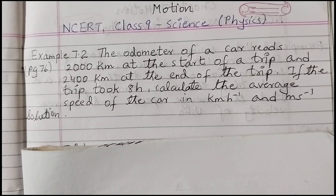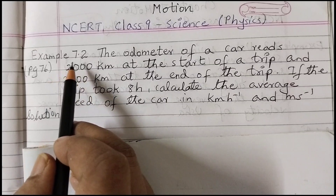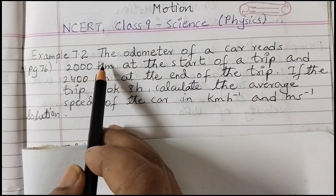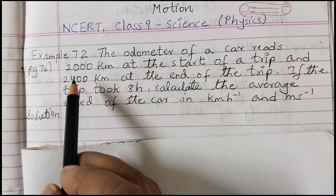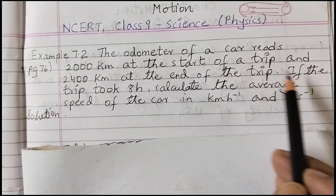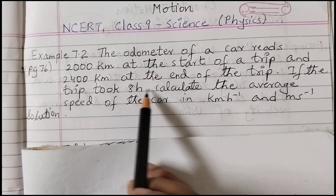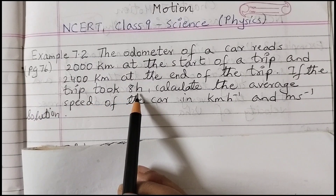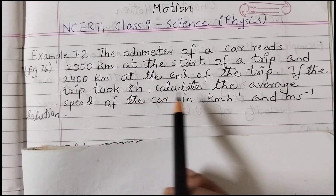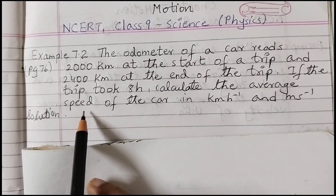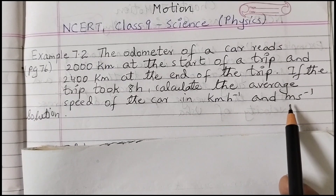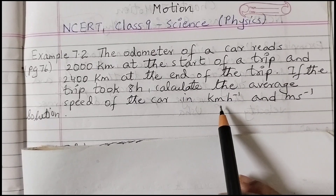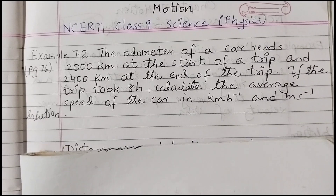Hello students, welcome back to Rosie Maths class. Today we shall discuss example number 7.2 of chapter 7, Motion — a science chapter of class 9 physics. The odometer of a car reads 2000 kilometers at the start of a trip and 2400 kilometers at the end. If the trip took 8 hours, calculate the average speed in kilometers per hour and meters per second.